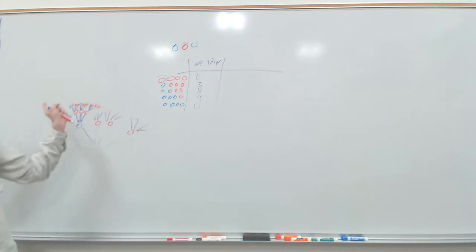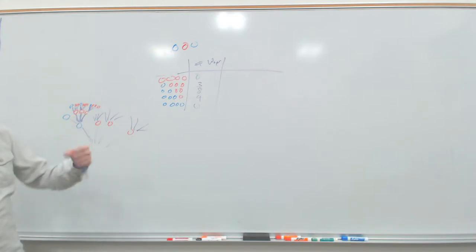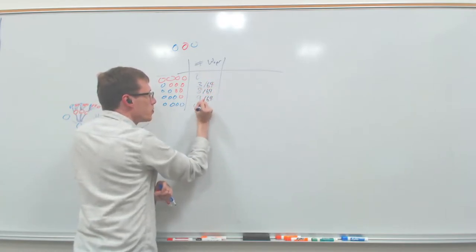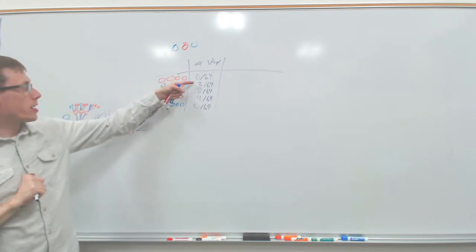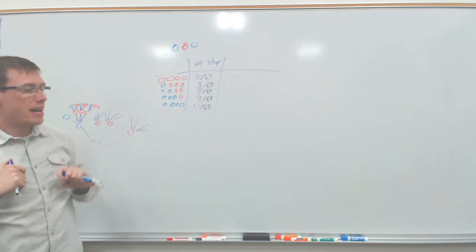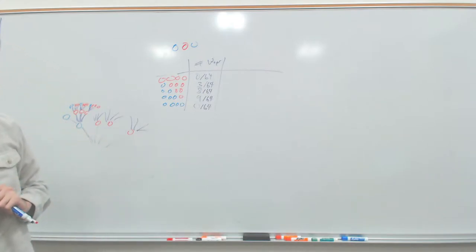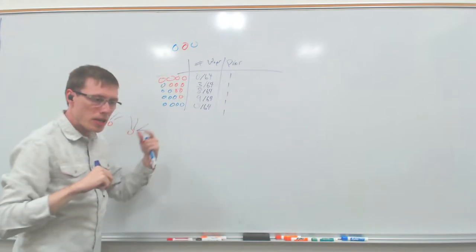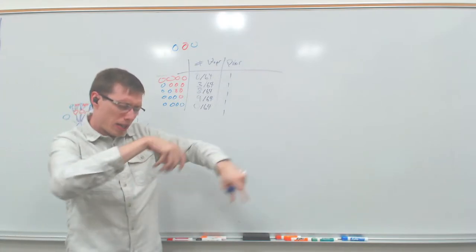Out of 64 total possible draws, the one-blue bag had a 3/64 chance, the two-blue bag had 8/64, and the three-blue bag had 9/64. The prior was all ones — I took five different stacks of poker chips, closed my eyes, swished them around, put one in the bag, so each configuration was equally likely.